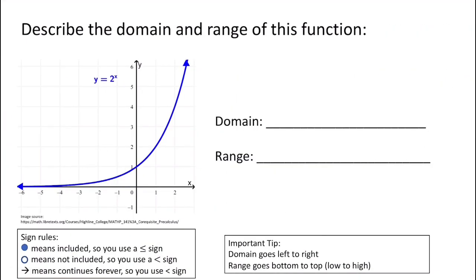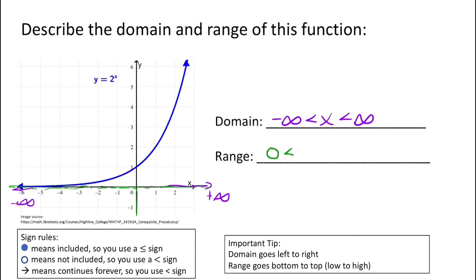Now let's look at an exponential function. For the domain, going left or right, it goes to positive infinity and negative infinity, so the domain is negative infinity less than x less than positive infinity. For the range, notice it's not going down forever — it doesn't include all the values below a certain point. Exponential functions have an asymptote: the graph gets really close to some y value but never equals it. In this case that value is 0, so this graph gets really close to 0 but doesn't include it. So we say 0 is less than y, and since it goes up to positive infinity, we write 0 less than y less than infinity.